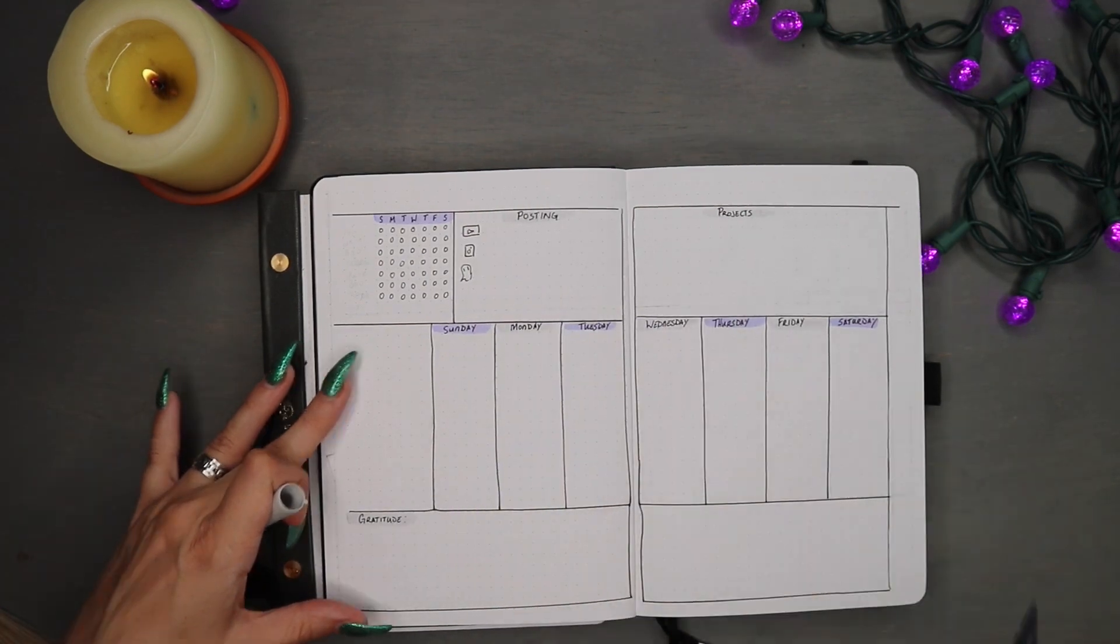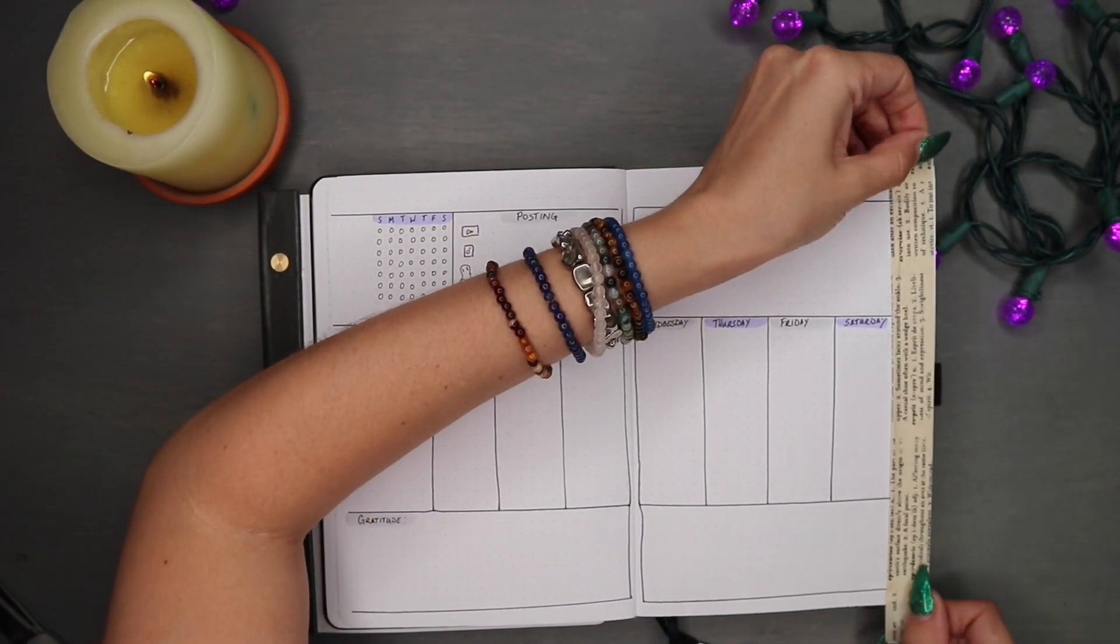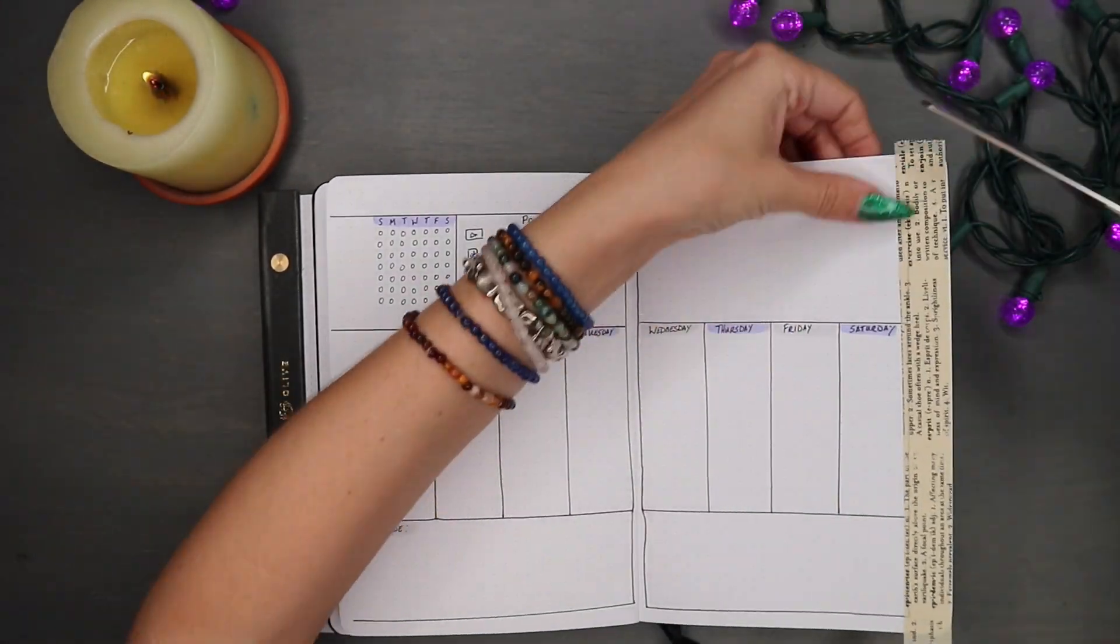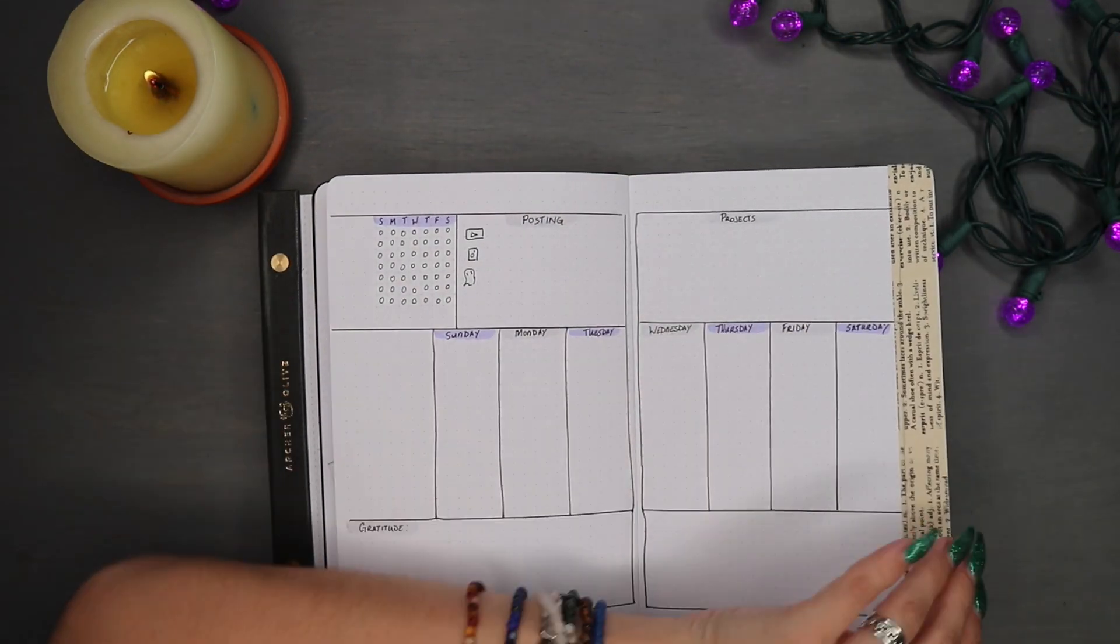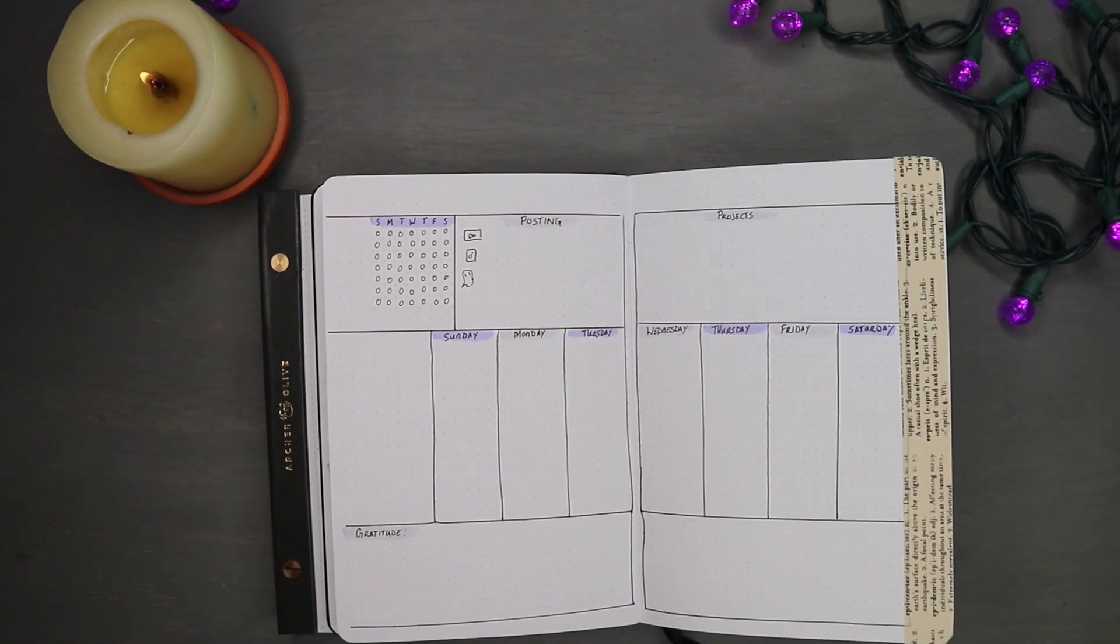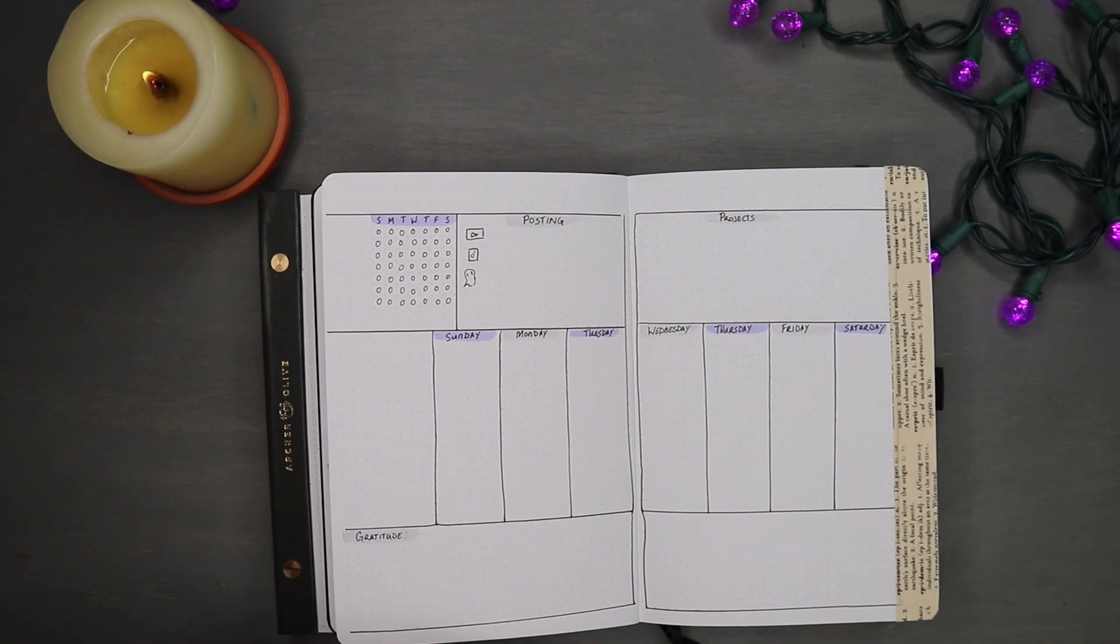We've got lots of Halloween setup, then of course my posting schedule and my projects for the week. So projects for the week get its own nice big space because those are the weekly goals, weekly projects, and then they get broken up throughout the week into the day, so you can kind of see what's going on and what still needs to be done. Then at the bottom of the page with my week in the middle, nice and neat.